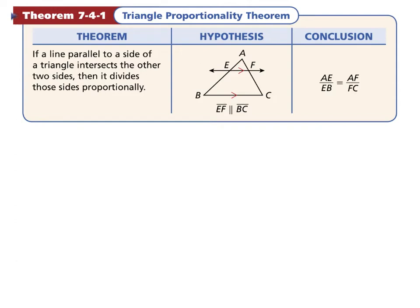Here's what it looks like. We have a line that is parallel to another side of that triangle, and it intersects the other two sides. So it divides the sides proportionally.